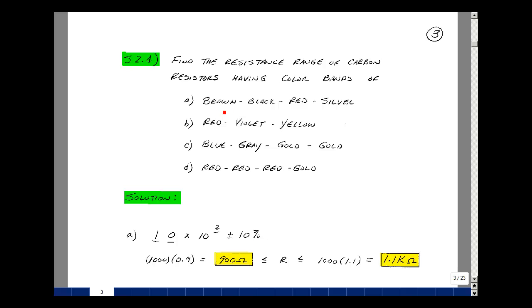The color brown is 1, black is 0, red is 2, and silver is 10 percent. So we're looking at a nominal value of 1,0 times 10 to the 2, which is 1000 ohms, and then a 10 percent tolerance because we're going to fall between 90 percent and 110 percent of that number. So between 900 ohms and 1.1k ohms.